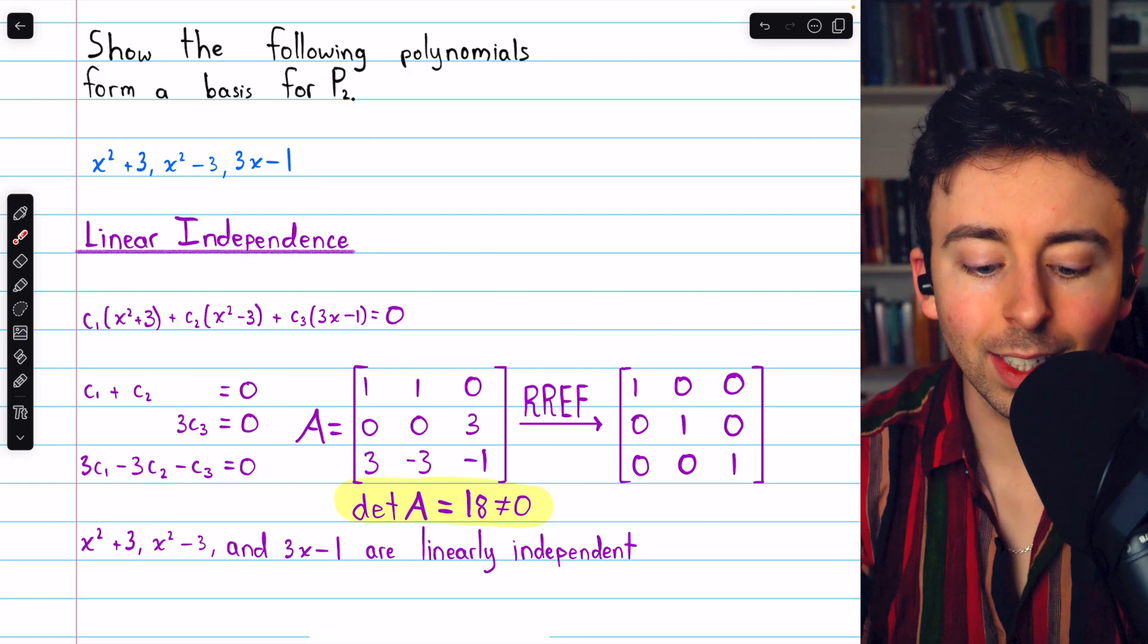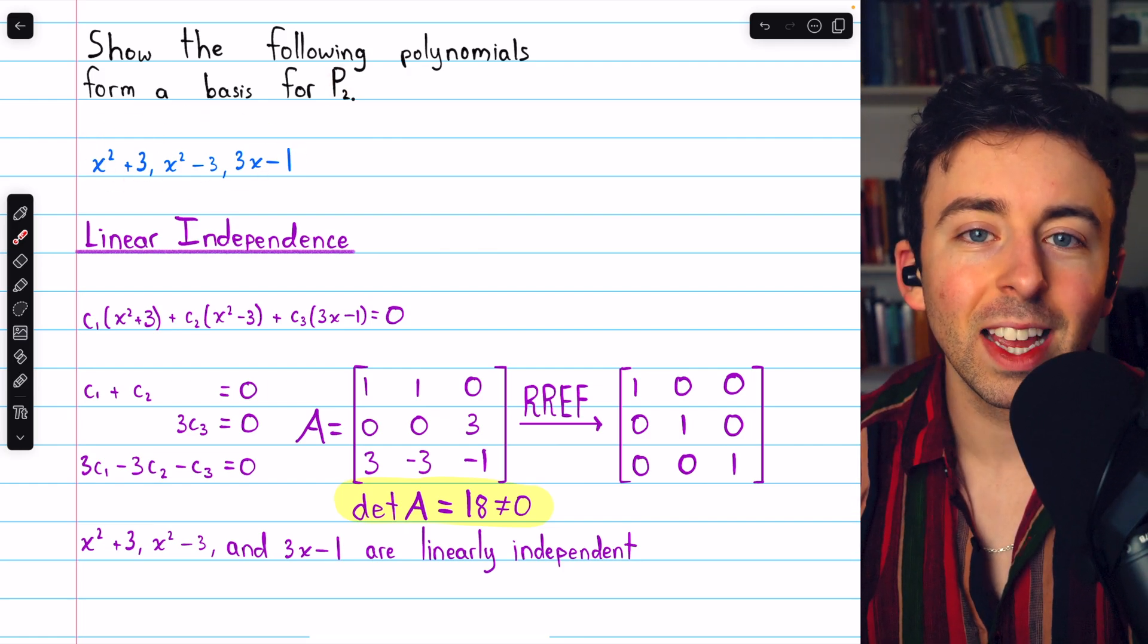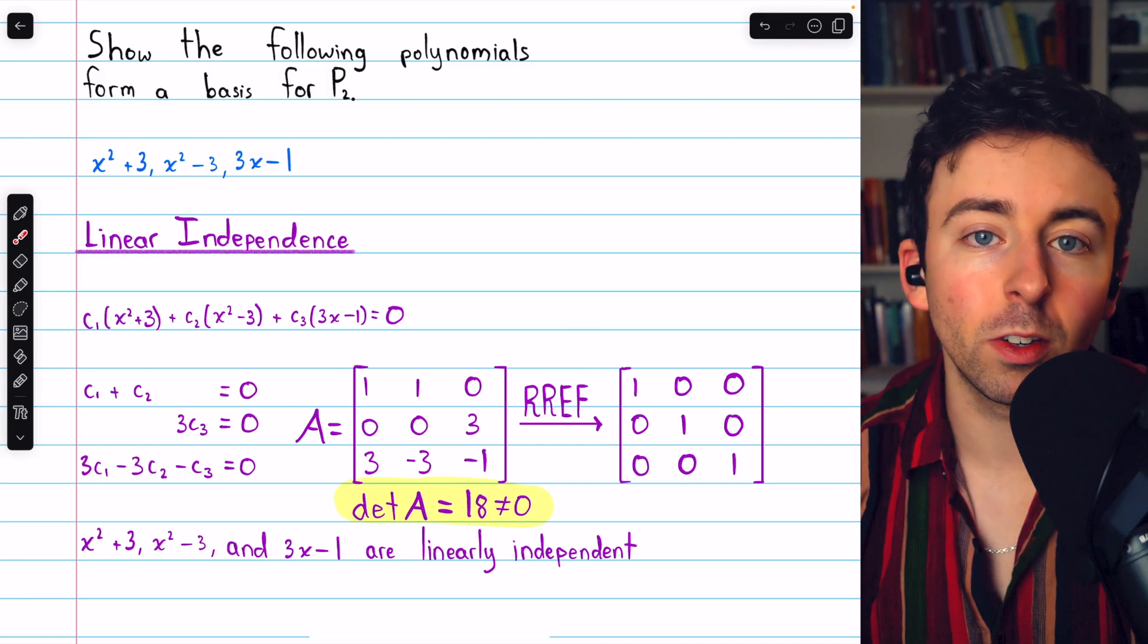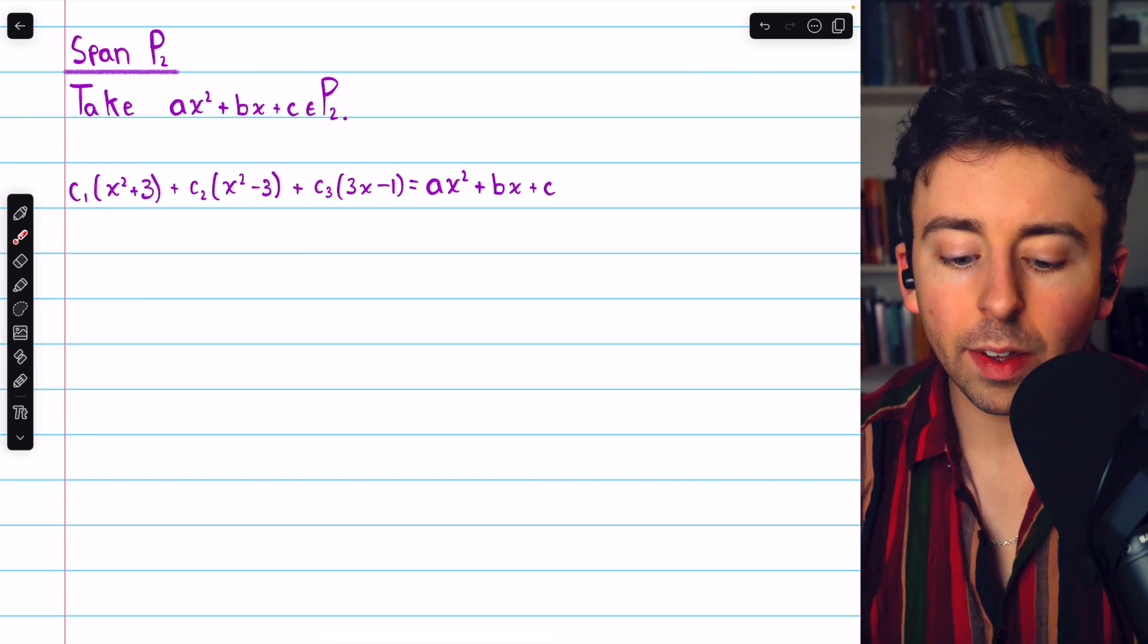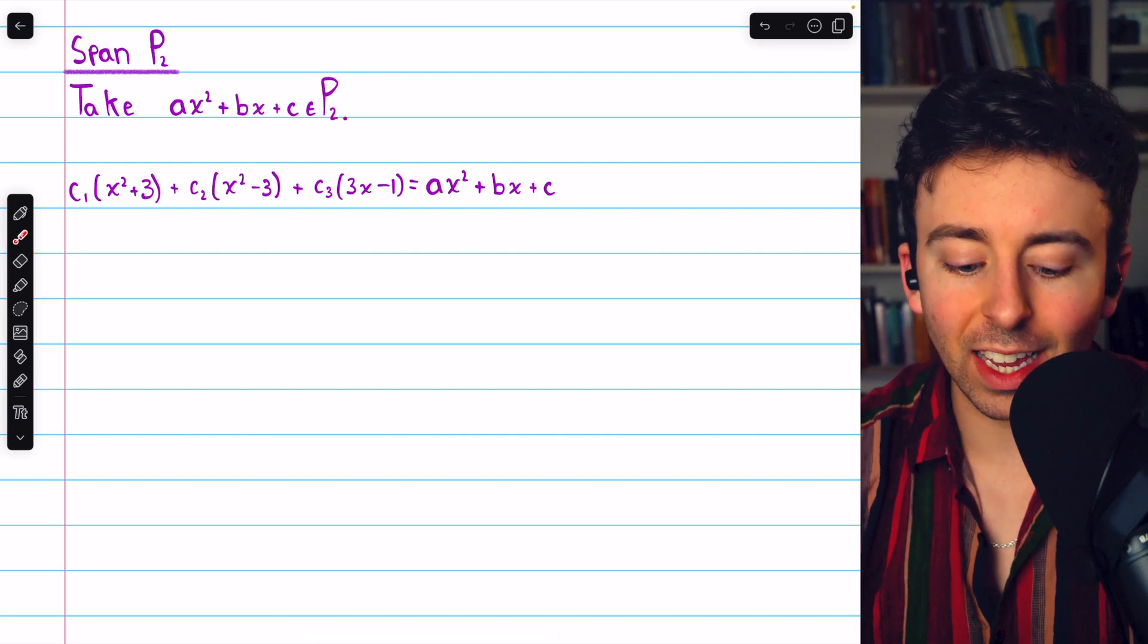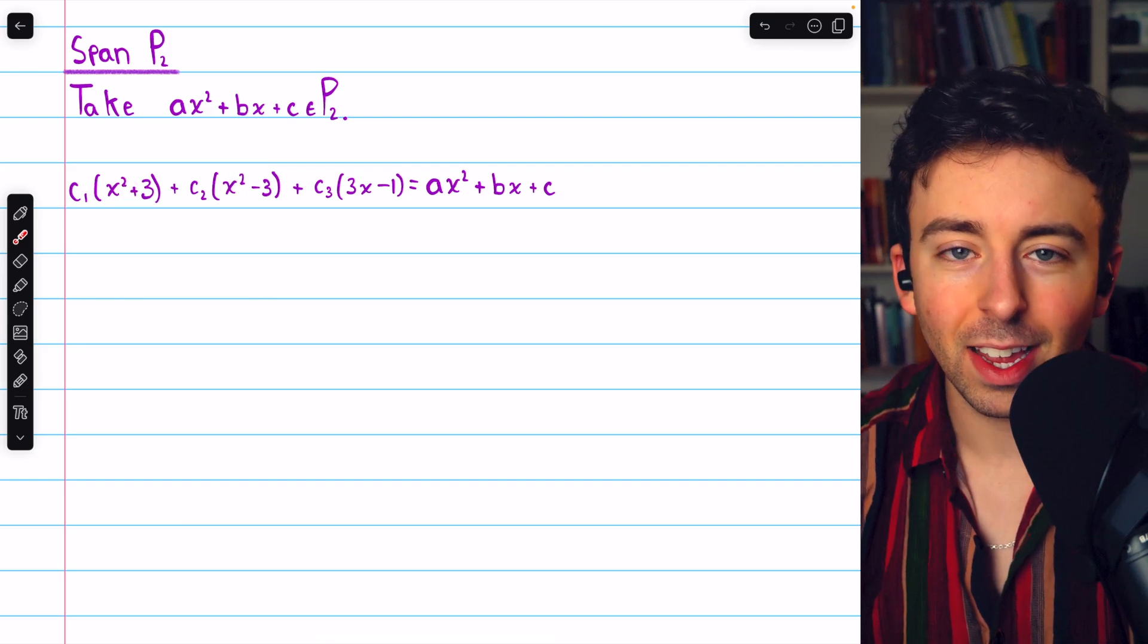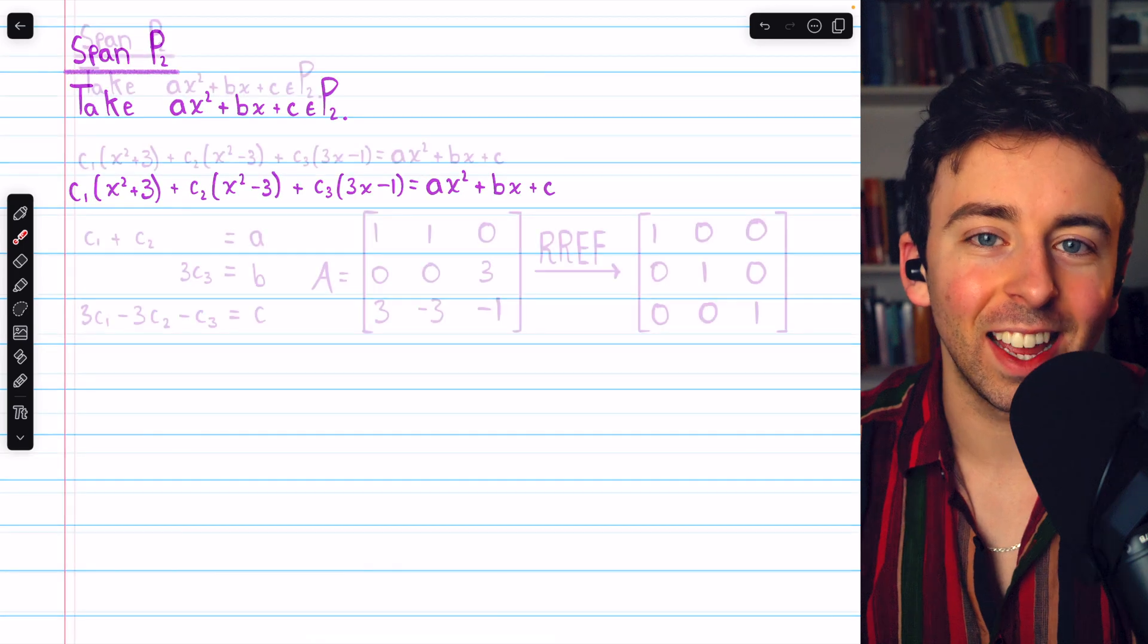Okay, so we've got a linearly independent set of vectors in this space of polynomials. Now we need to show that they span the space, and that will be sufficient to show that it's a basis. To show our three polynomials span the space, we have to take an arbitrary polynomial from the space and show that it can be written as a linear combination of our three polynomials. And this process is actually the same as what we just did. Again,